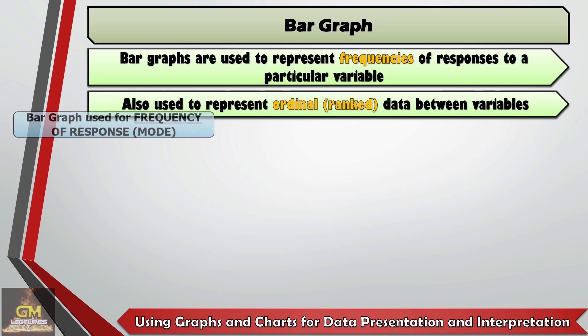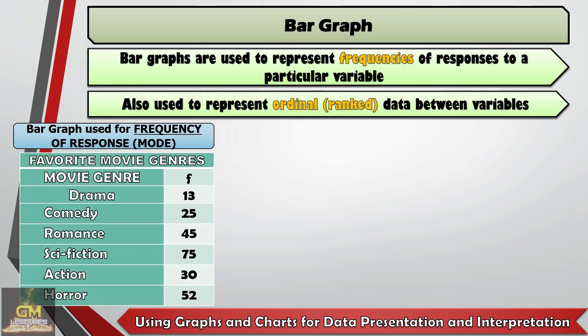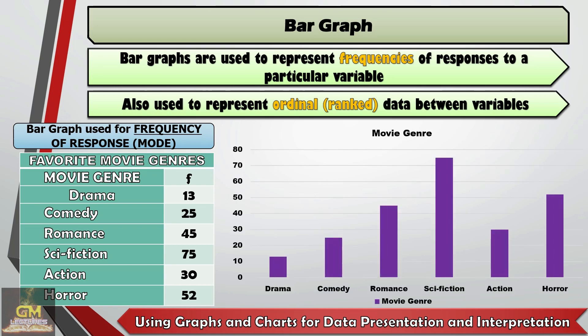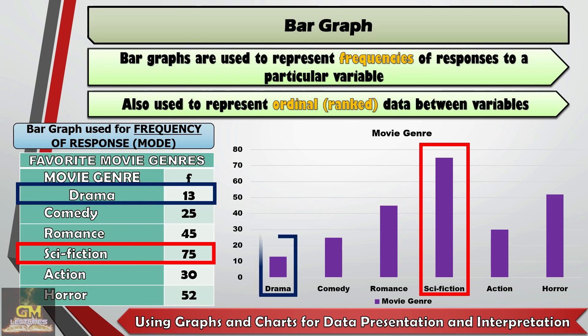Another example for a bar graph is one used for frequency of response, or mode, which refers to the number of frequencies of responses to a particular variable. Same as the earlier example identifying favorite movie genres, if we convert this data set into a bar graph, we're able to recognize that science fiction is the genre preferred by most respondents, while drama is still the genre preferred by the least of the respondents.